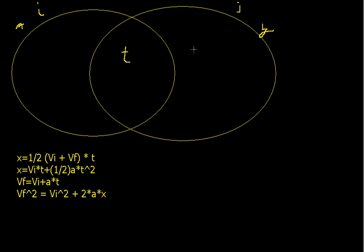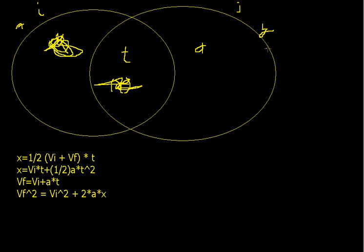In a lot of cases the acceleration is only in y, but you can have acceleration in both x and y. In projectile motion problems, it's always in y — there is no acceleration in x. They'll tell you it's under gravity, so the acceleration in x is zero. The acceleration in y equals 9.8.